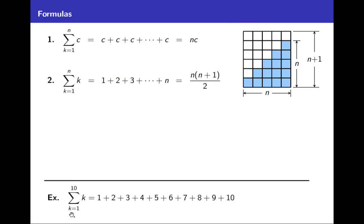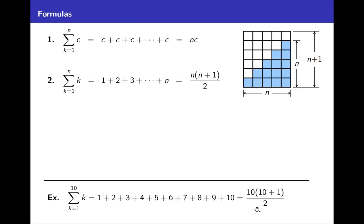For example, the sum from k = 1 to 10 of k, which we calculated as 55 on the previous example. Let's check using the formula with n = 10: 10 × (10 + 1) / 2 = 10/2 × 11 = 5 × 11 = 55. That's exactly the answer we got by adding them up directly.